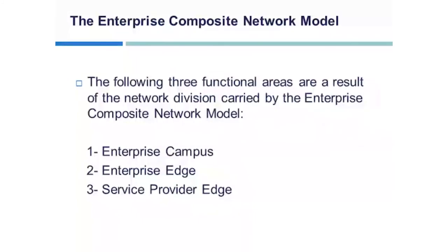The building core layer, also known as the campus backbone sub-module, is a high-speed backbone designed to switch packets as fast as possible. The Enterprise Composite Network Model identifies three functional areas: Enterprise Campus — defined as one or more buildings with multiple virtual and physical networks connected across a high-performance multi-layer switch backbone; Enterprise Edge — which aggregates connectivity from various external resources and filters traffic into the Enterprise Campus functional area; and Service Provider Edge — which facilitates communication to WAN and Internet Service Provider technologies.